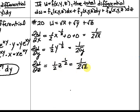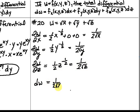Plugging into the formula, the total differential dw equals 1 over 2√x times dx, plus 1 over 2√y times dy, plus 1 over 2√z times dz.